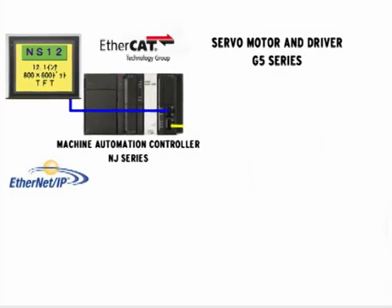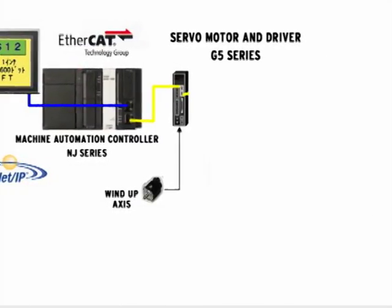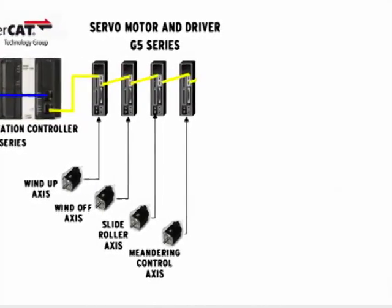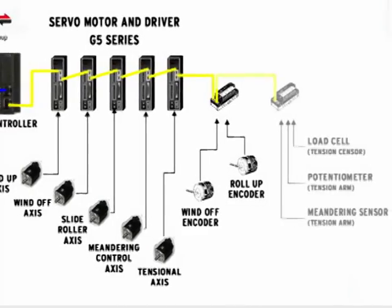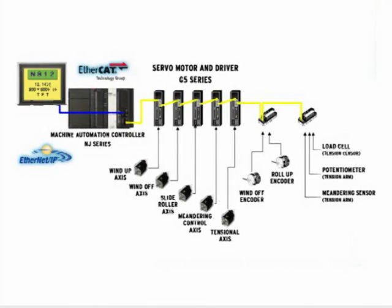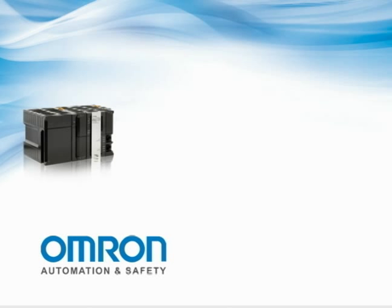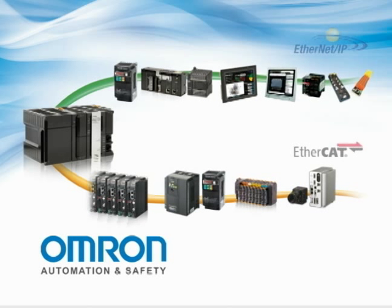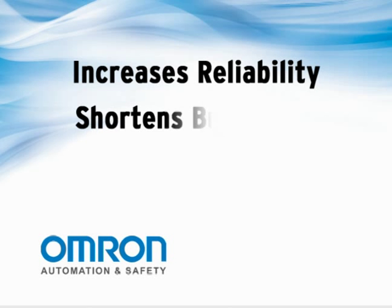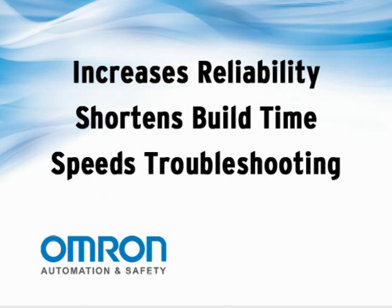Electrically interconnecting the many pieces of hardware required for the winding application is a formidable task. To simplify this process, OMRON's SysMAC automation platform supports both Ethernet IP and EtherCAT industrial networks. This networked approach to equipment interconnection and communications greatly simplifies the physical wiring needed to add or replace components. It increases system reliability, shortens build time, and speeds troubleshooting and maintenance.